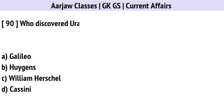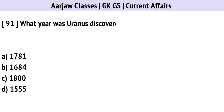Who discovered Uranus? Correct option is C: William Herschel.